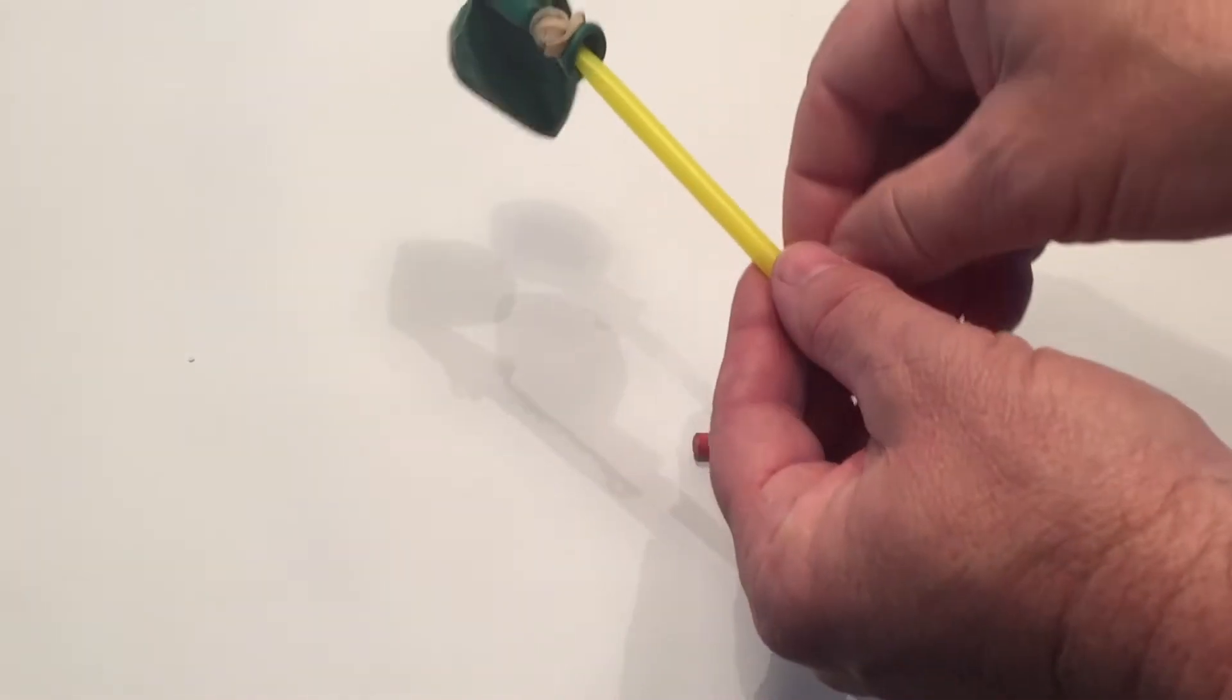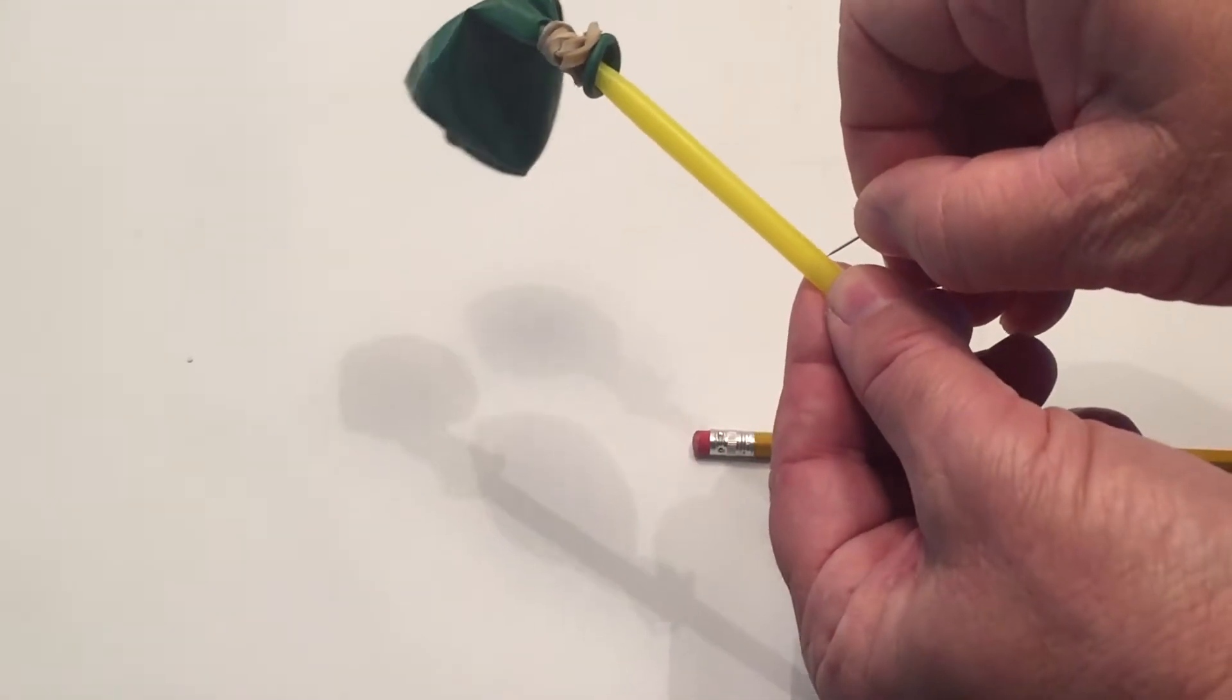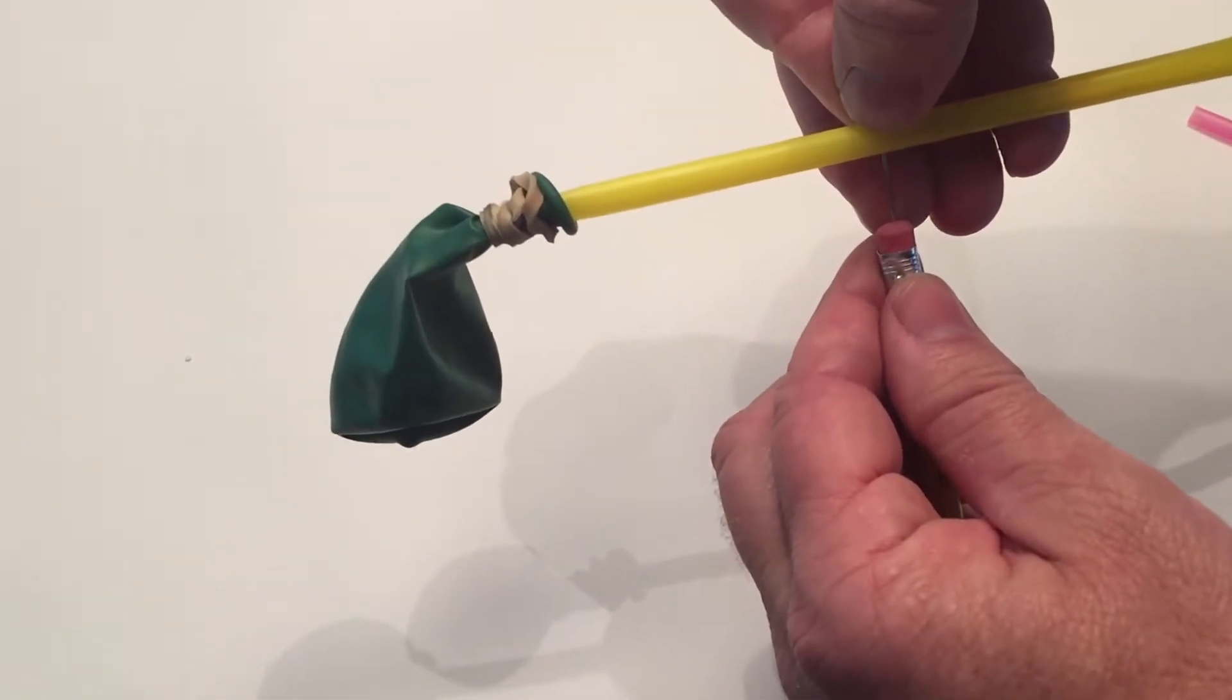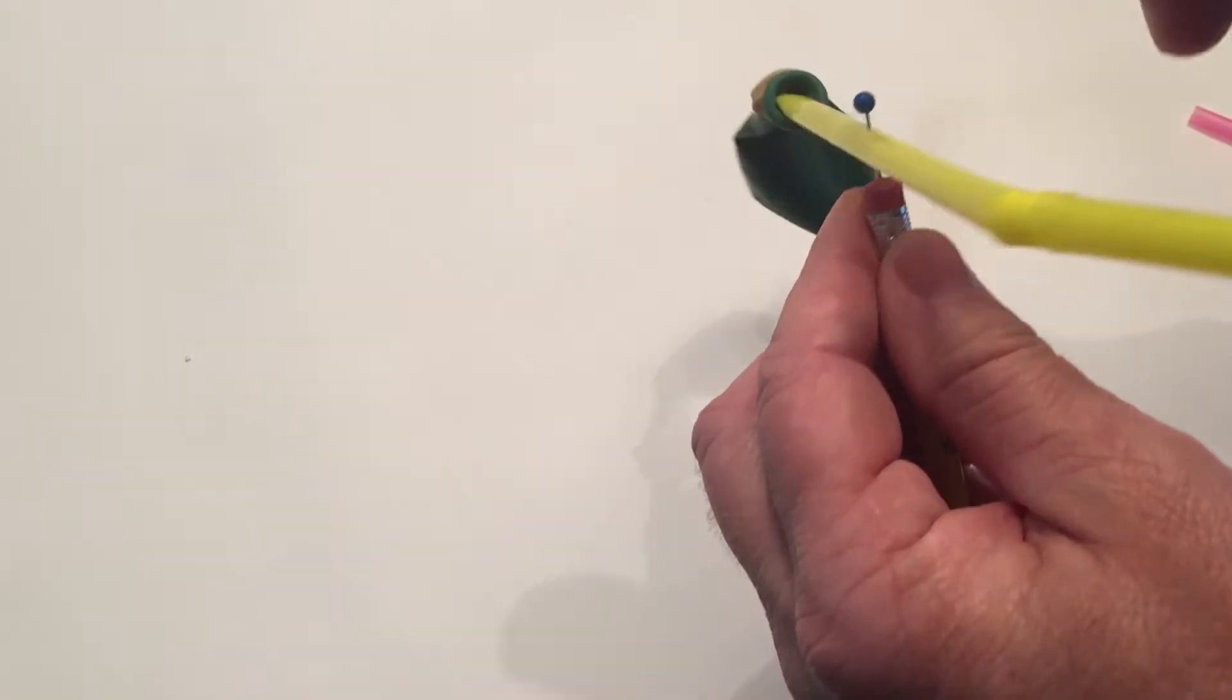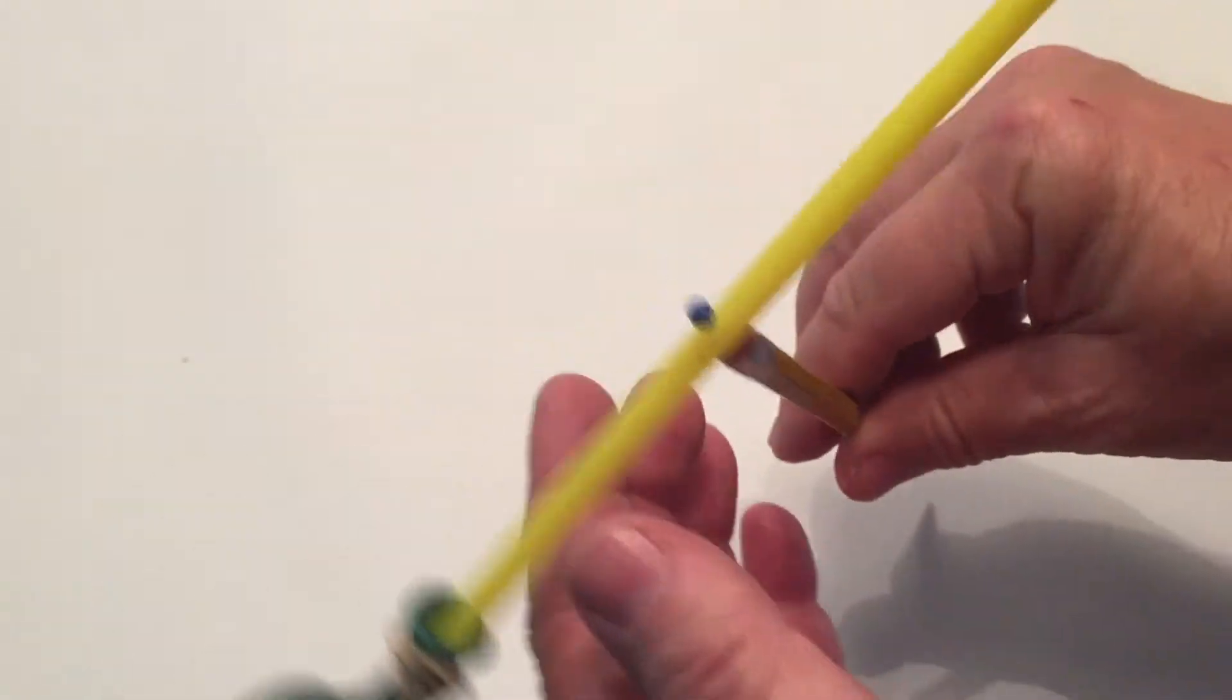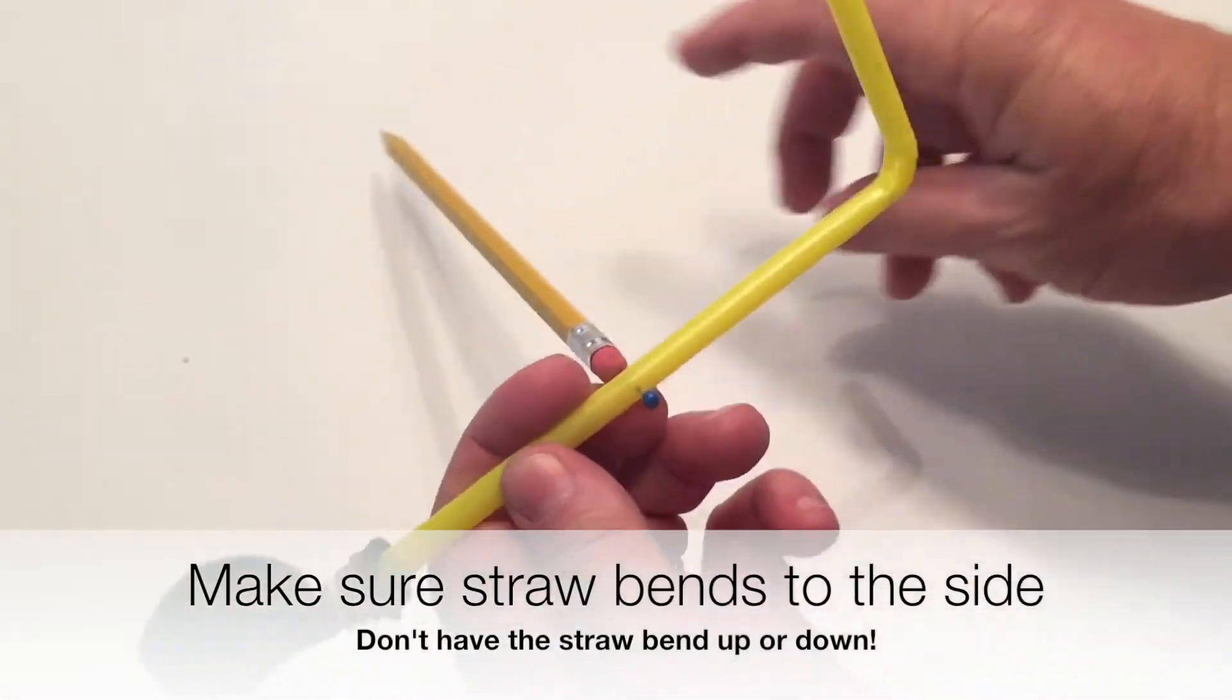Now with an adult, take your pin and put it through the middle of the straw about halfway through. It doesn't need to be exact, and then push that into the eraser of the pencil. Be careful as you know pins are sharp, so adult supervision is required. And then now you're pretty much set up with the experiment.